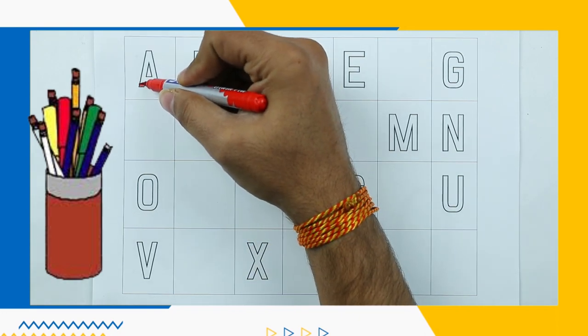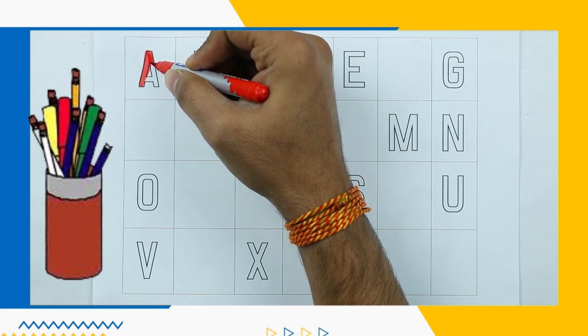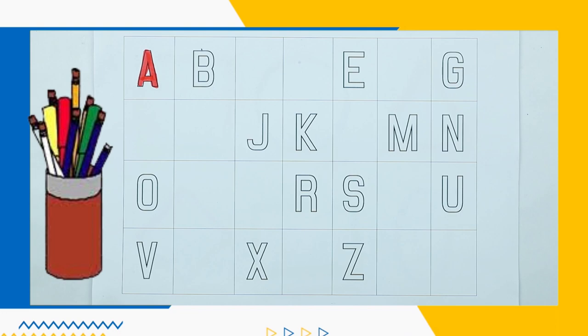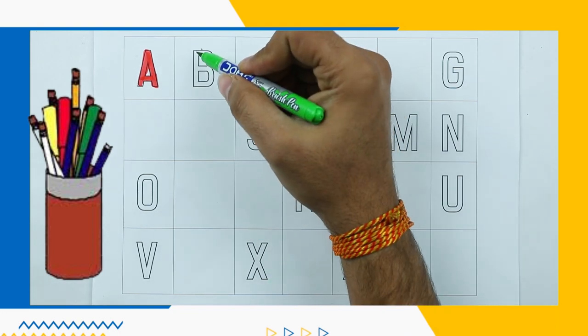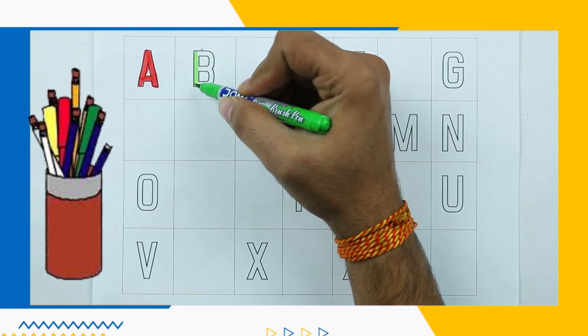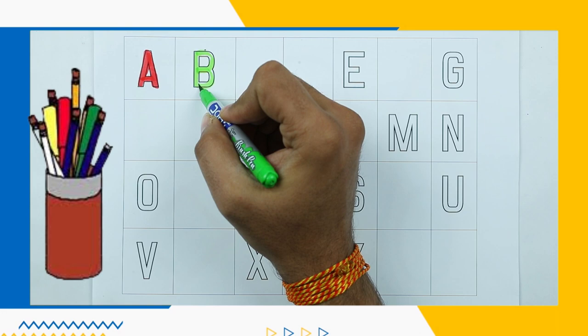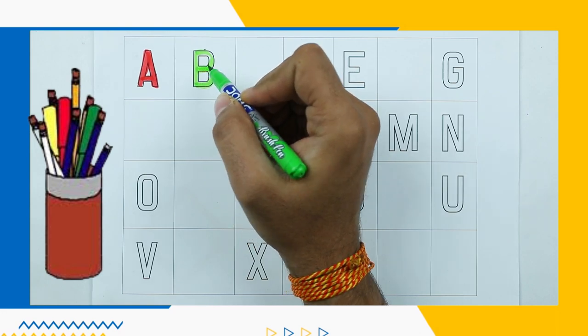A. A for Apple with red color. B. B for Ball with green color.